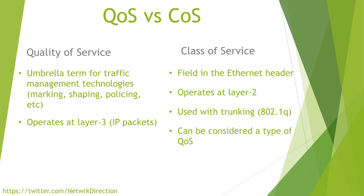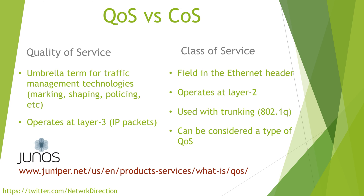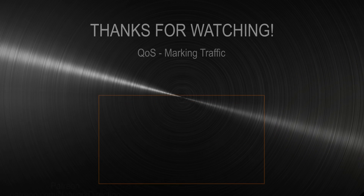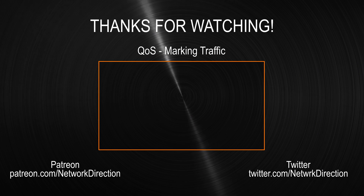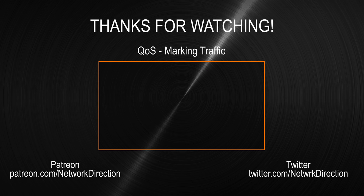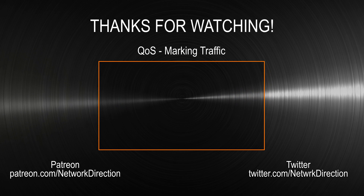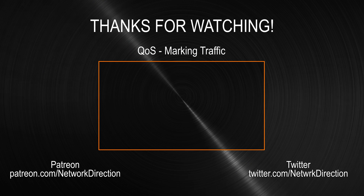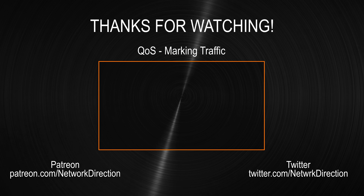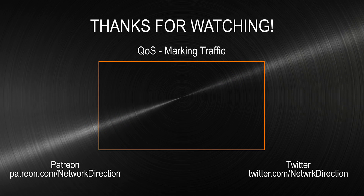One last point to avoid confusion: if you use Juniper routers and switches, you will find they use the term class of service when they are talking about configuring quality of service. So if you use their devices, just be aware that they say class of service and they mean the software process for configuring quality of service. We've covered the overview of QoS and what it does — and does not do — for your network. In the next video, we're going to look at the process of classifying traffic: identifying traffic and marking it. The video after that will talk about taking action on this traffic, so I hope you will join me for both of those videos.